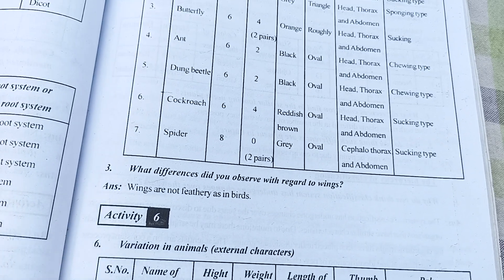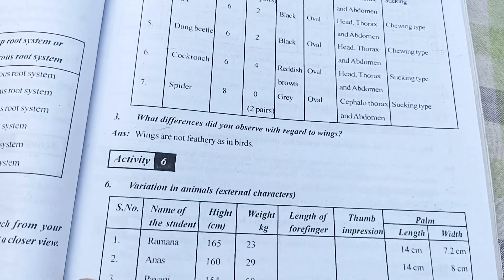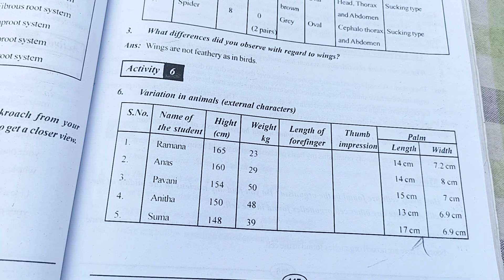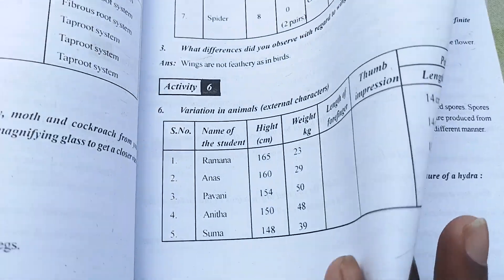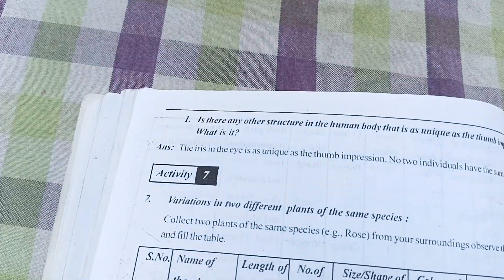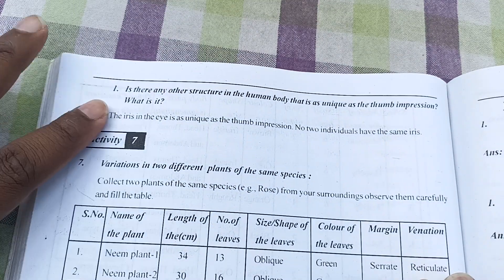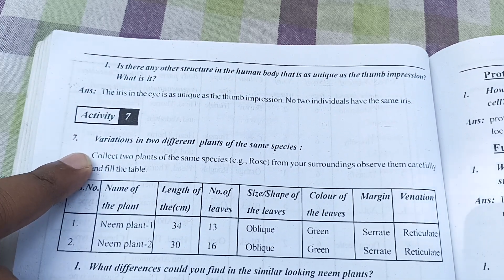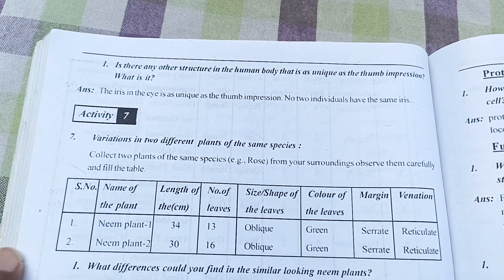You can see this one — it is Activity 6. Let's go next. After that, you can see this one. This is Activity 6 continued, and it is Activity 7.